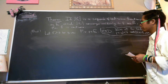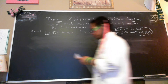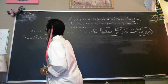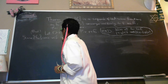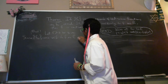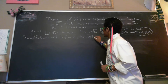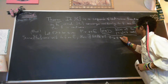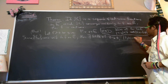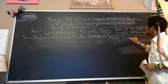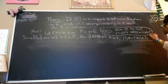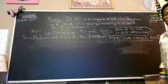Since f_n converges uniformly to f on E, there exists a capital N in the naturals such that for all n greater than or equal to N, we have that |f_n(z) - f(z)| is less than epsilon/3 for all z in E.